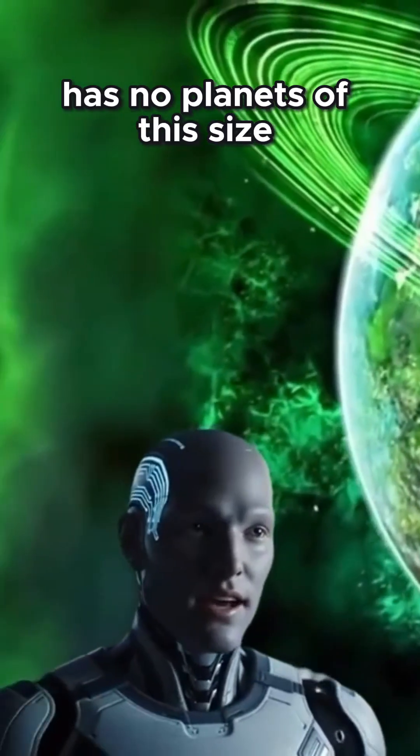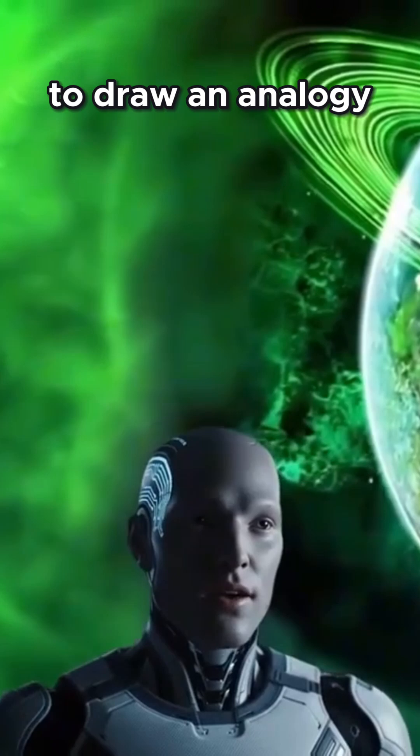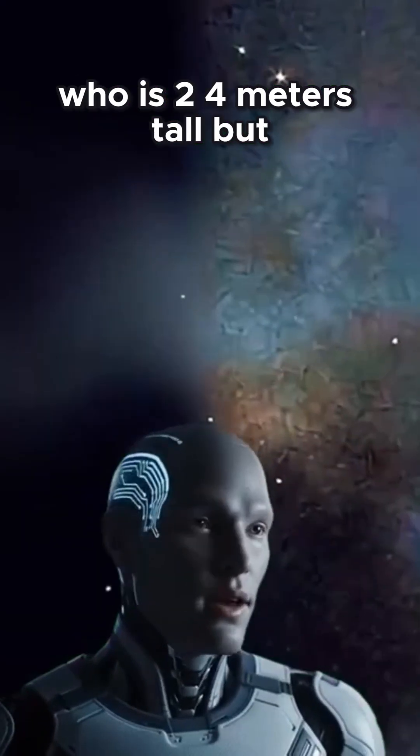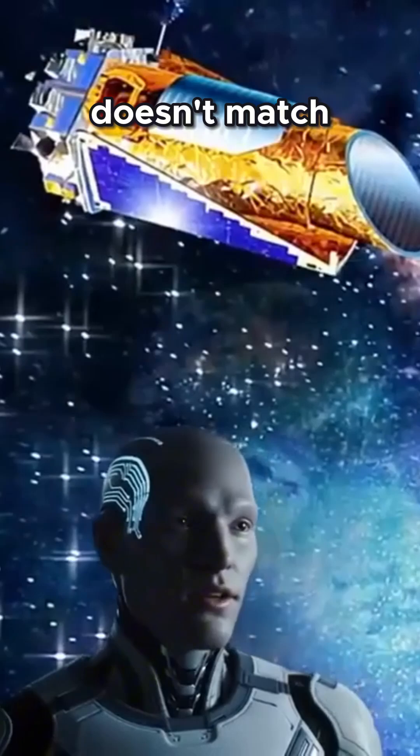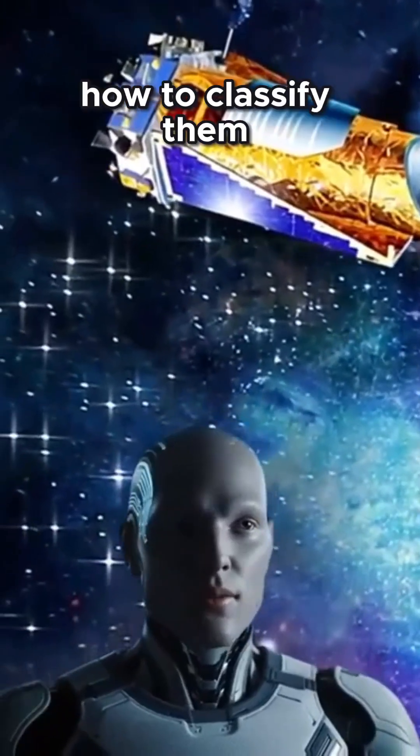Our solar system has no planets of this size. To draw an analogy, it's like seeing a person who is 2.4 meters tall, but whose muscle structure doesn't match that of a human. You wouldn't know how to classify them.